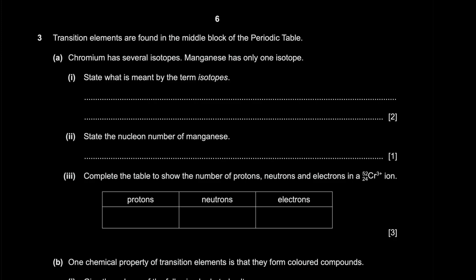What is meant by the term isotopes? They are atoms of the same element with a different number of neutrons. Or you could say atoms with the same number of protons, different number of neutrons.